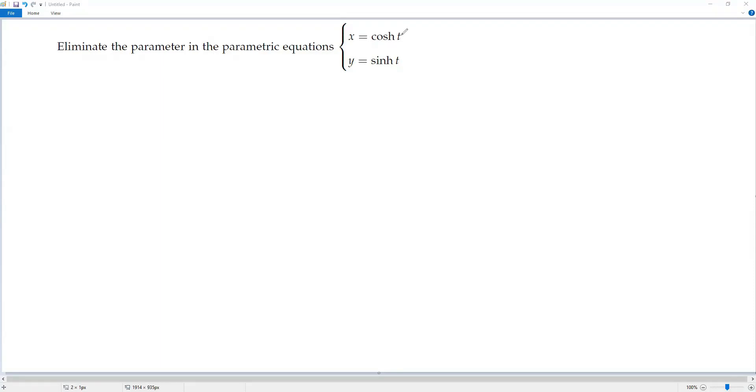Here the parameter is t, so we have to eliminate this parameter t and give the equation in terms of the two variables x and y.